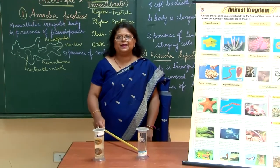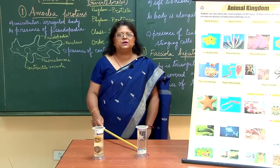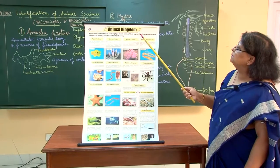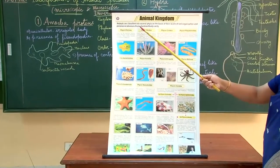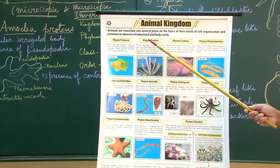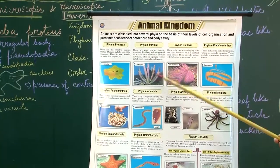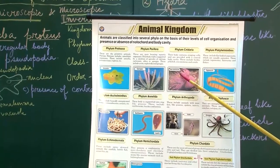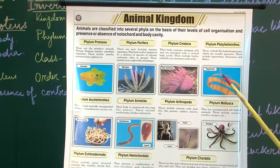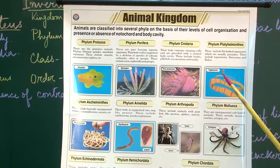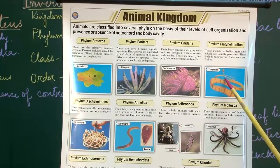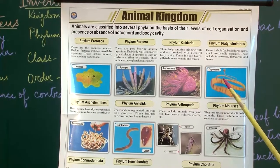This is where the invertebrate world comes to an end, and now we go to the synopsis of the entire animal kingdom. We are classifying them depending upon their level of organization, presence of notochord, and body cavity. The unique member of Protozoa is Amoeba. Phylum Porifera — sponges. Cnidaria consists of sea anemone, and we discussed hydra. Platyhelminthes consists of tapeworms and flatworms including liver fluke — Fasciola hepatica. The only free-living member is planaria, but we studied the parasite liver fluke.